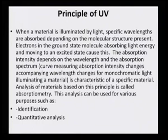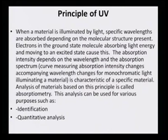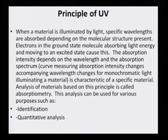Principles of UV: when a material is illuminated by light, specific wavelengths are absorbed depending on the molecular structure present. Electrons in the ground state molecule absorb light energy and move to an excited state, causing this absorption. The absorption intensity depends on the wavelength, and the absorption spectrum — the curve measuring absorption intensity changes accompanying wavelength changes for monochromatic light illuminating a material — is a characteristic of a specific material. Analysis based on this principle is called absorptiometry.